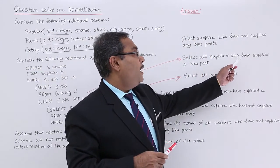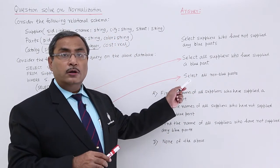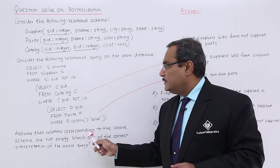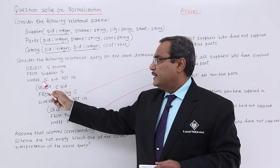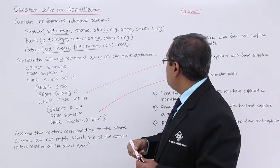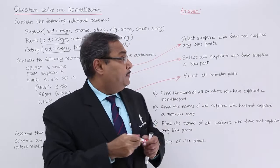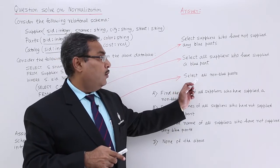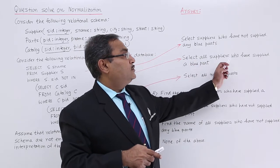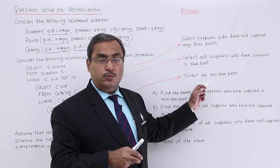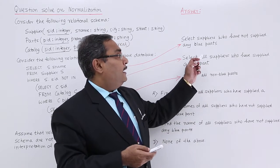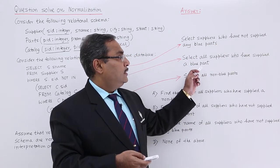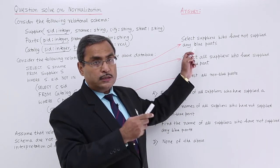The middle query's interpretation in plain English is: select all suppliers who have supplied a blue part, because it works using NOT IN. Now executing the outer query — SELECT S.sname FROM Supplier S WHERE S.SID NOT IN (that result) — the logical implication is: select suppliers who have not supplied any blue parts.